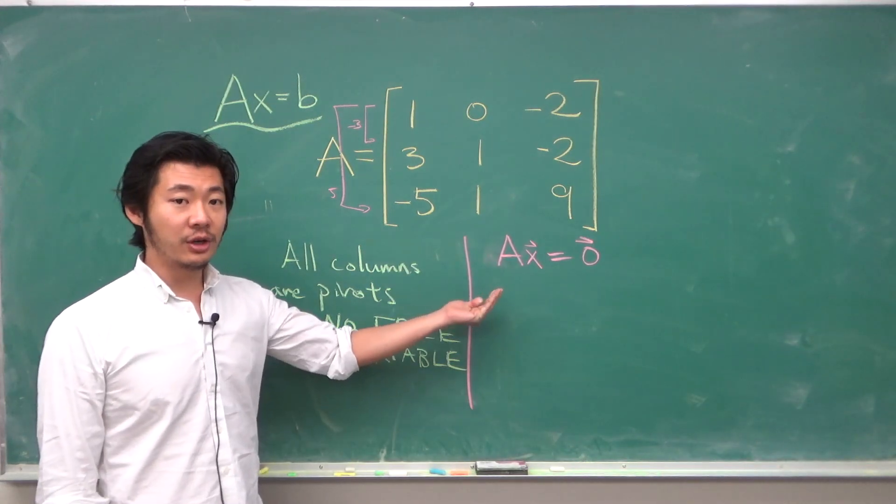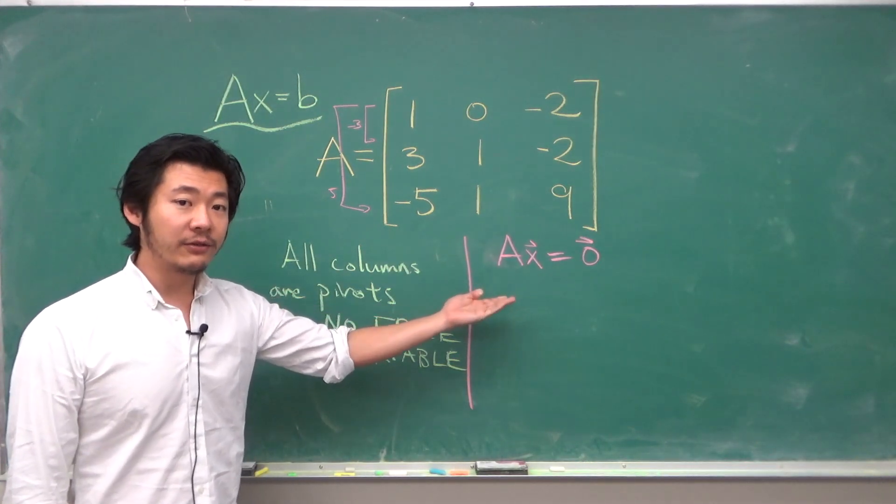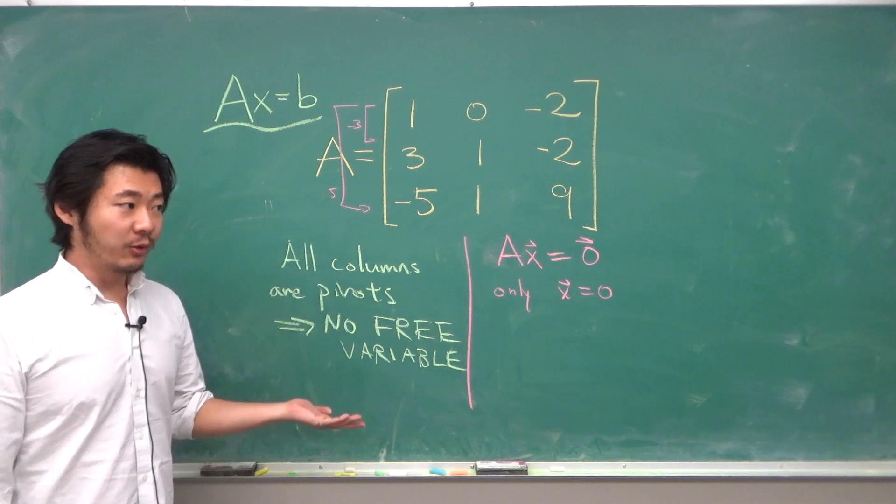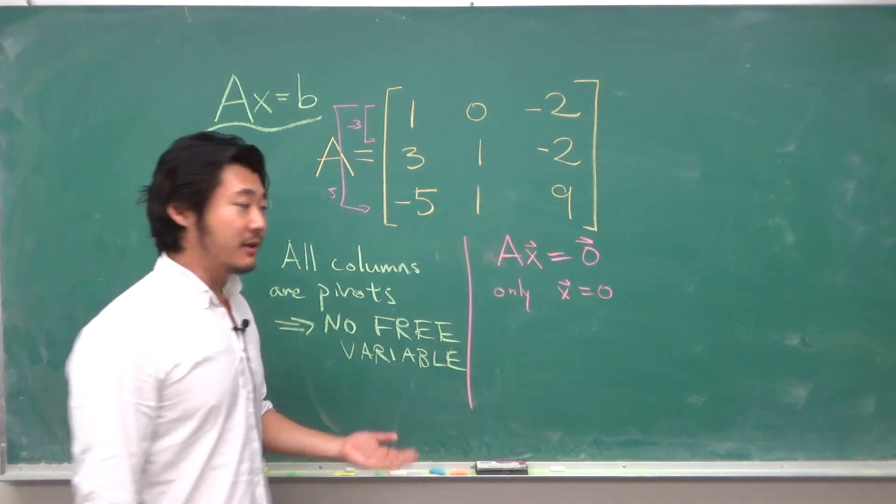So the only solution to the homogeneous equation will only have the trivial solution which is another way of saying the columns of A are linearly independent.